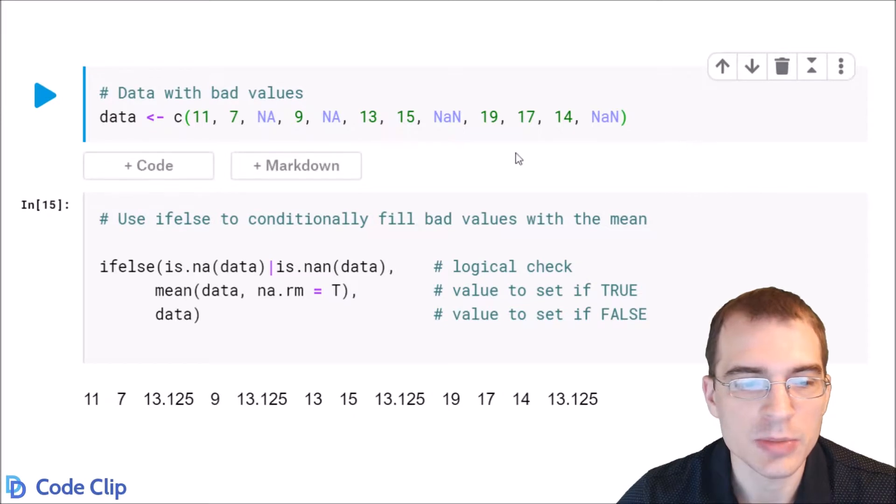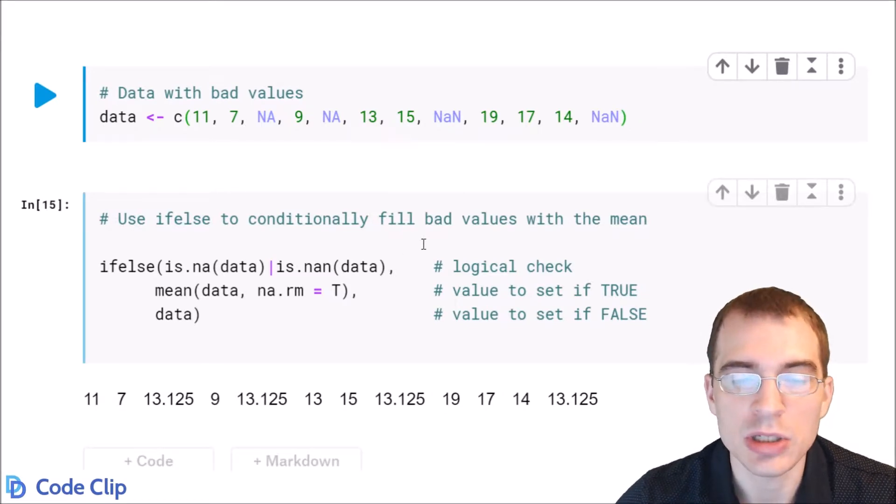So if we load in some data here that has some bad values, it has some NAs and some NANs, which are things we don't want, we can use the ifelse function to fill those in with whatever we want.